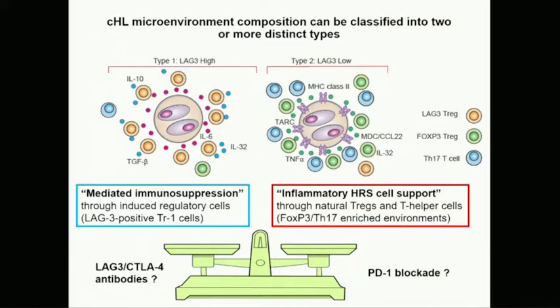So how does this come back to a model relevant for treating Hodgkin lymphoma? We believe there are two types of microenvironments: Type 1 with loss of MHC class II and high LAG3 as an induced phenotype — mediated immunosuppression — where HRS cell factors induce immunosuppressive function through IL-10 and TGF-beta. Type 2 has an inflammatory phenotype with intact antigen presentation, macrophages, cytotoxic T-cells, and interferon-gamma, though HRS cells still thrive on the inflammatory response.